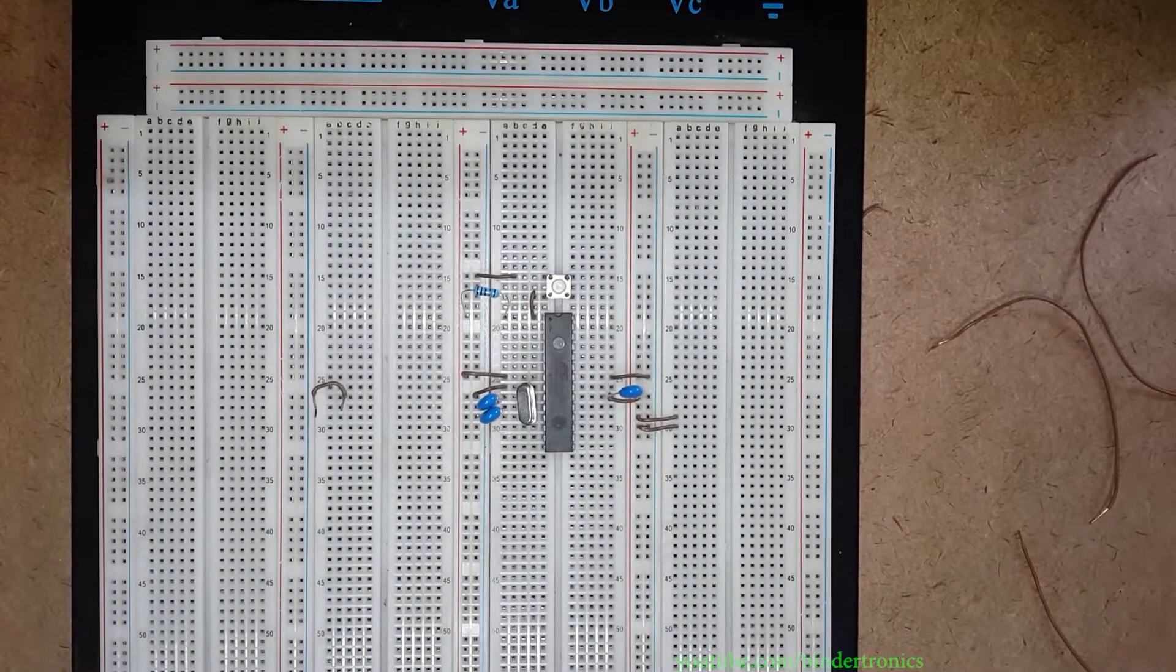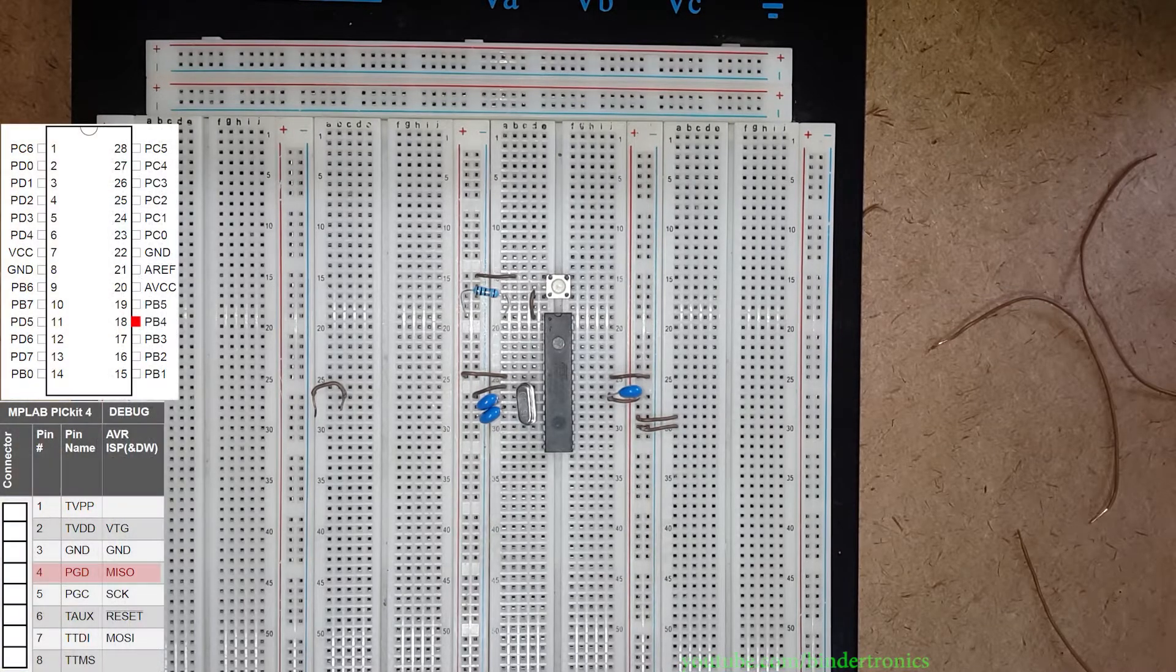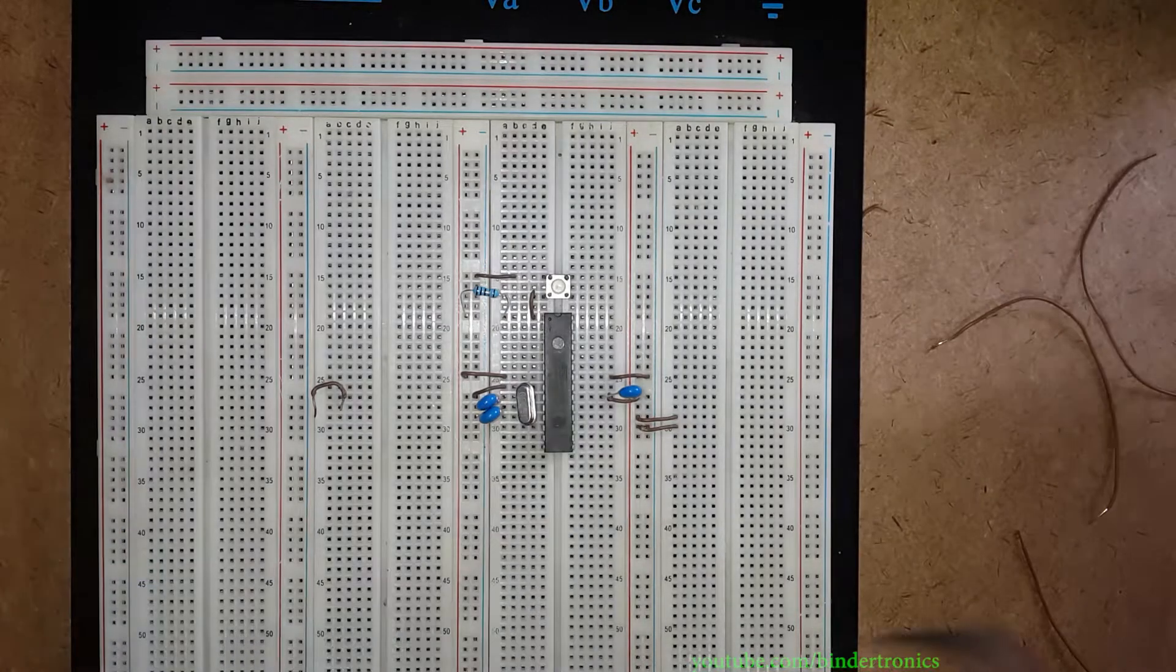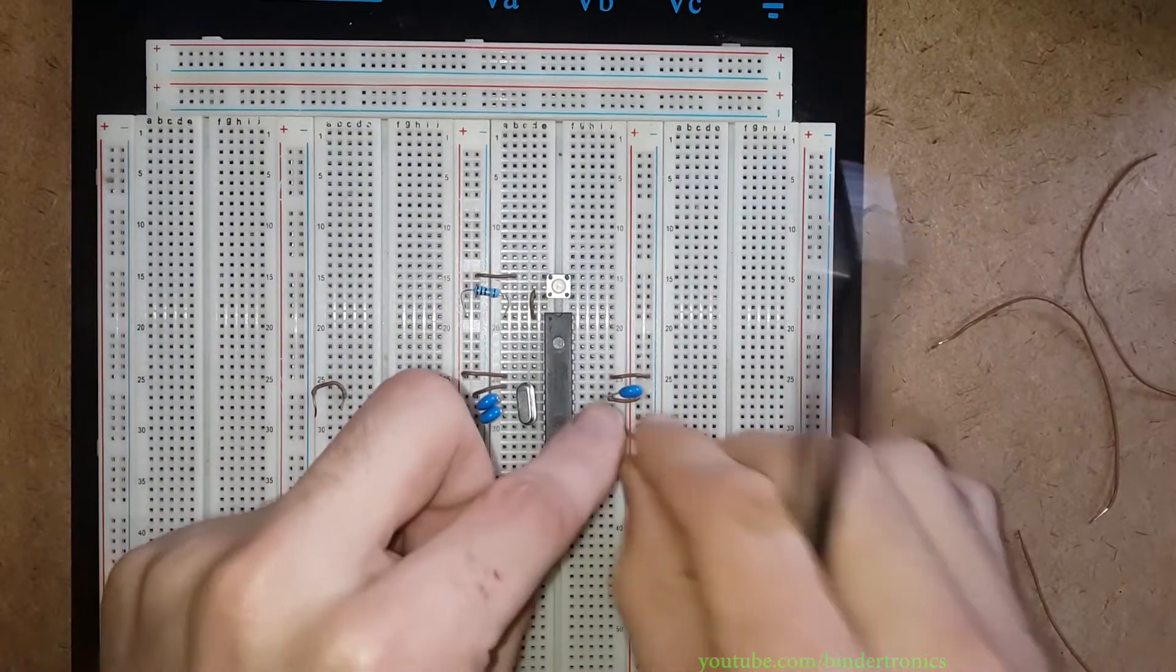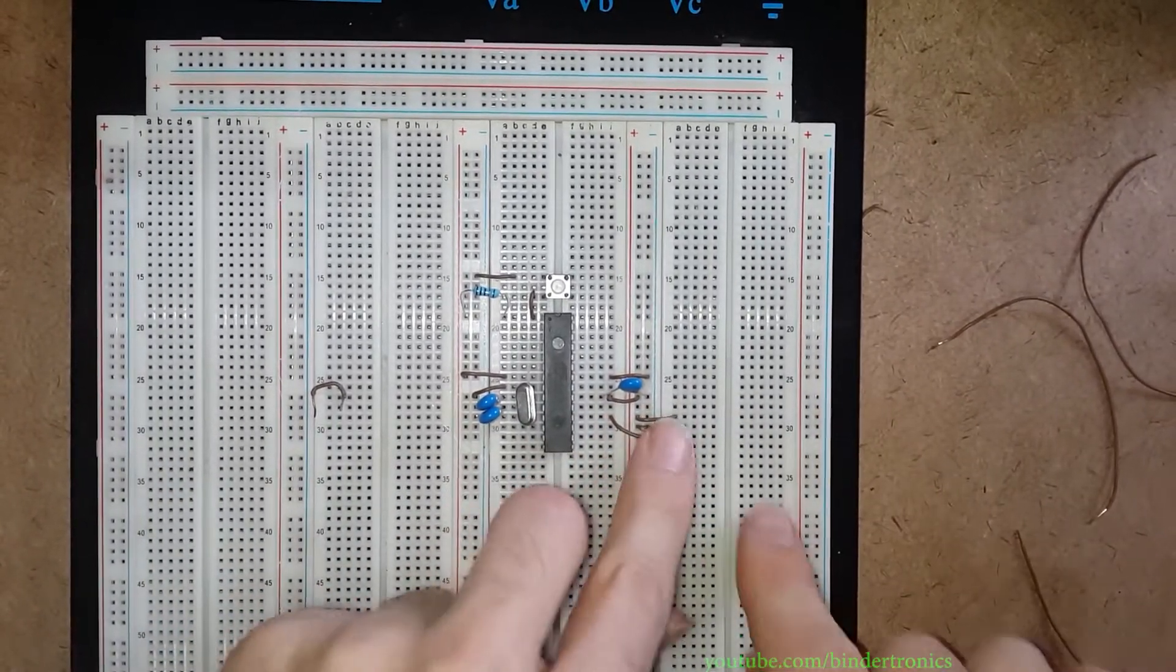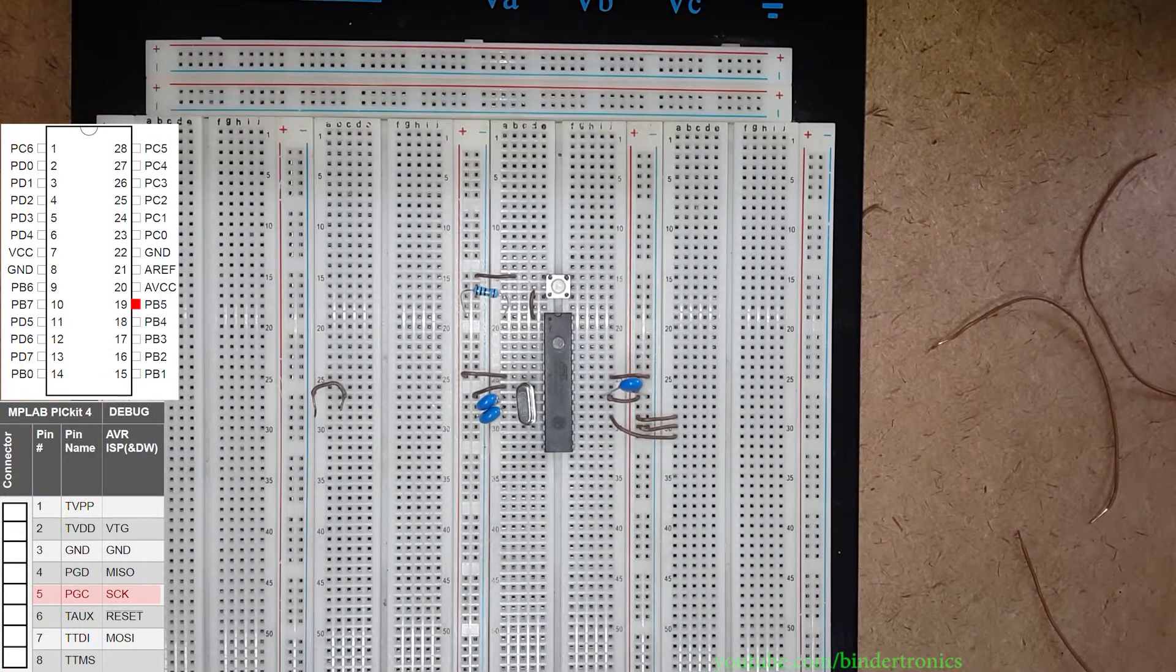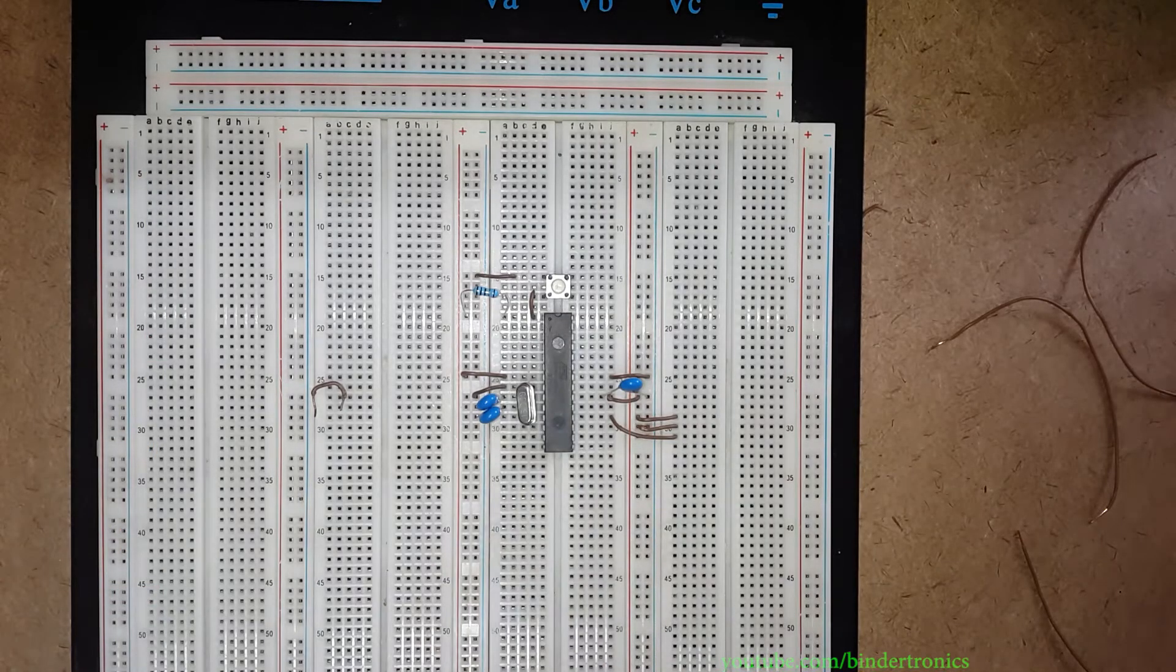And the next line from the PICkit is going to be MISO, so pin 18 on the chip itself. So we go 15, 16, 17, 18. We bridge that one. And the one after that is going to be SCK. SCK is located on pin 19, so the one above MISO.